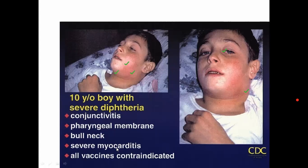Once the individual was infected, vaccines will not work properly; all vaccines are contraindicated. Once the infection enters through the nose or mouth, the tonsil area is infected. The 10-year-old boy's site of infection is the conjunctiva — the ocular region. From the ocular region it enters the pharynx, then the neck is affected, after which it enters the muscular layer of the heart.